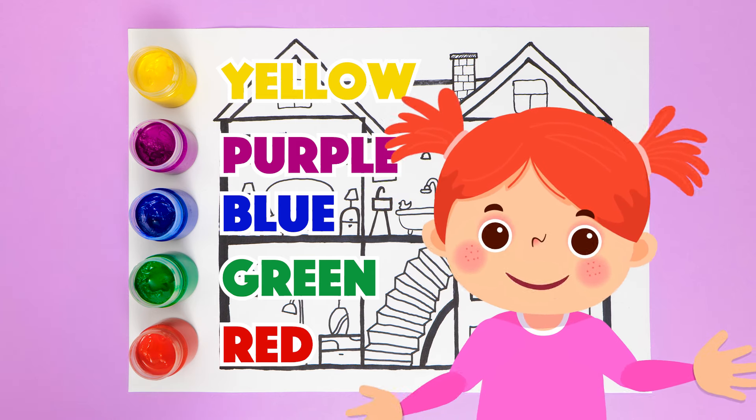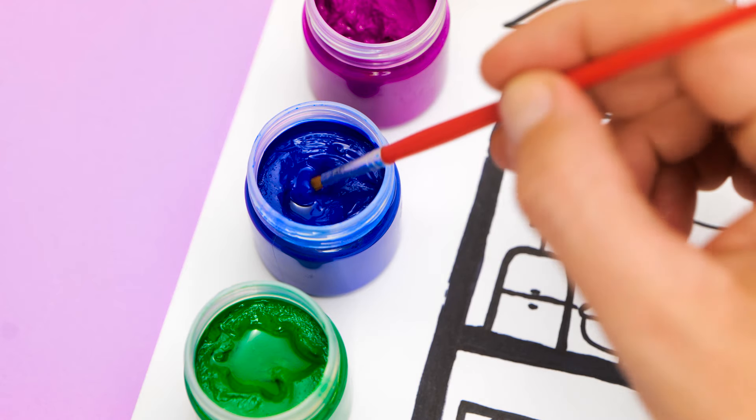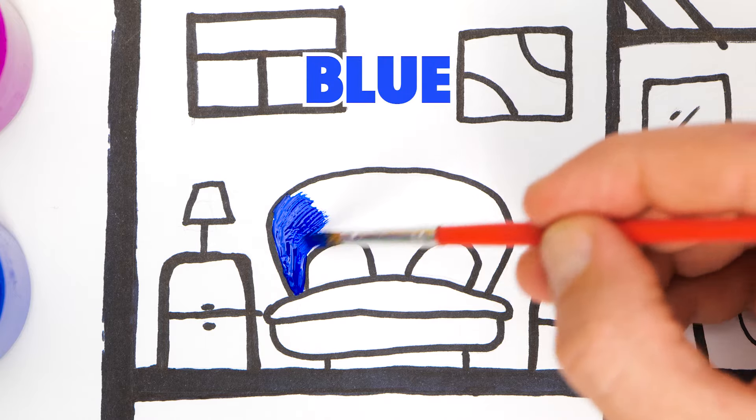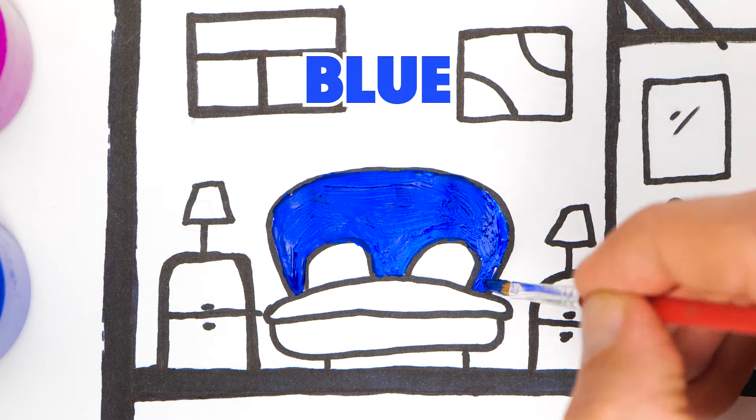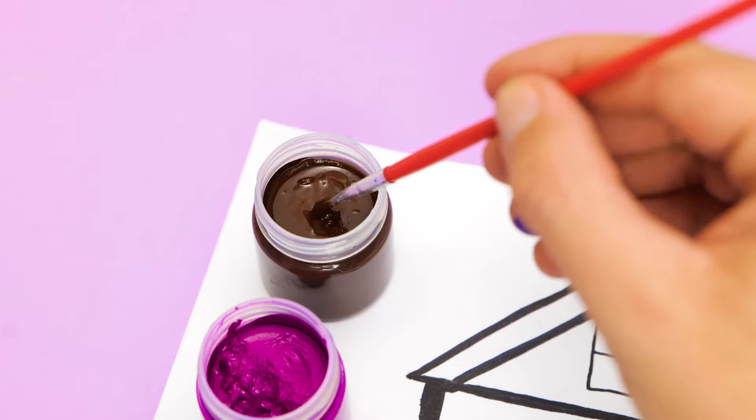Now let's color everything. Whoa! Do we have all the colors of the rainbow here? Almost. So let's start with blue. I want the big bed in the parents' room to be blue.